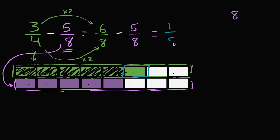So it's just going to be 1/8. And you can see that numerically up here. If I have 6 of something, in this case it's 6/8, and I'm going to subtract 5 of that something, in this case 5/8, I'm going to be left with 1 of that something, or 1/8.